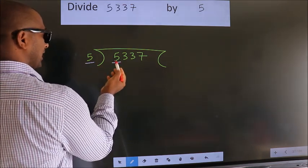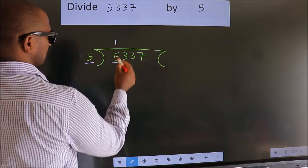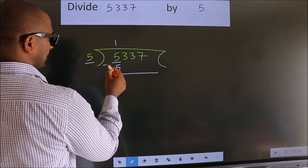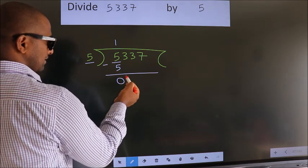When do we get 5? In 5 table. 5 once, 5. Now we should subtract. We get 0.